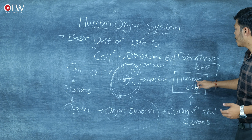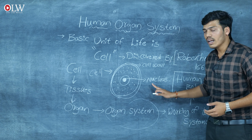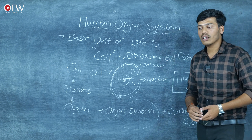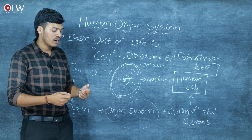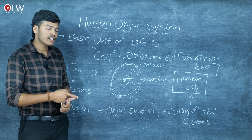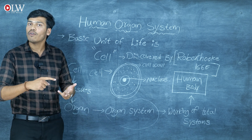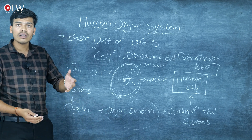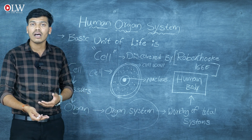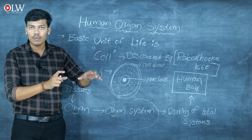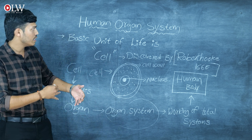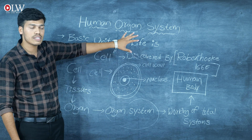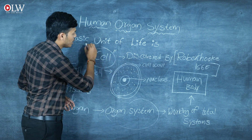The working of the total system leads to the human body as the final end product. In the human body there are many systems: the respiratory system, excretory system, digestive system, circulatory system, excretion, reproduction, and nervous system. These different organ systems combine together to work for the human body. The basic thing underlying all these works is simply one thing — that is the cell.